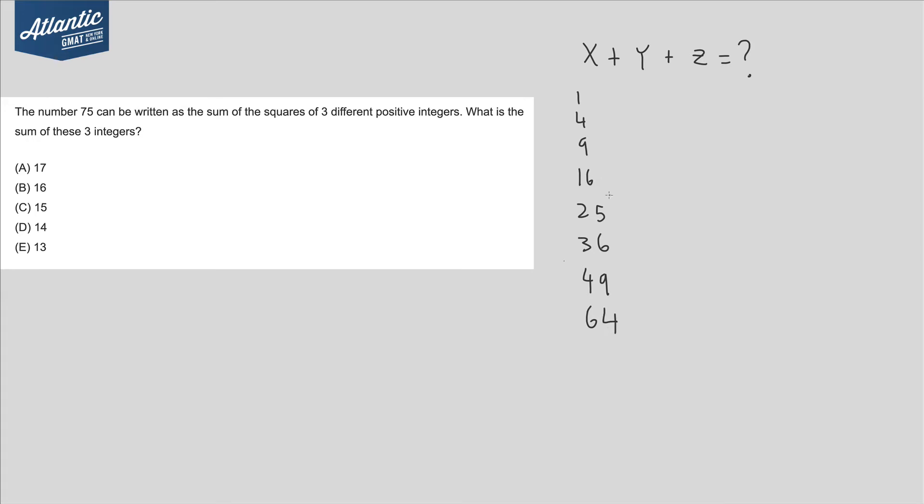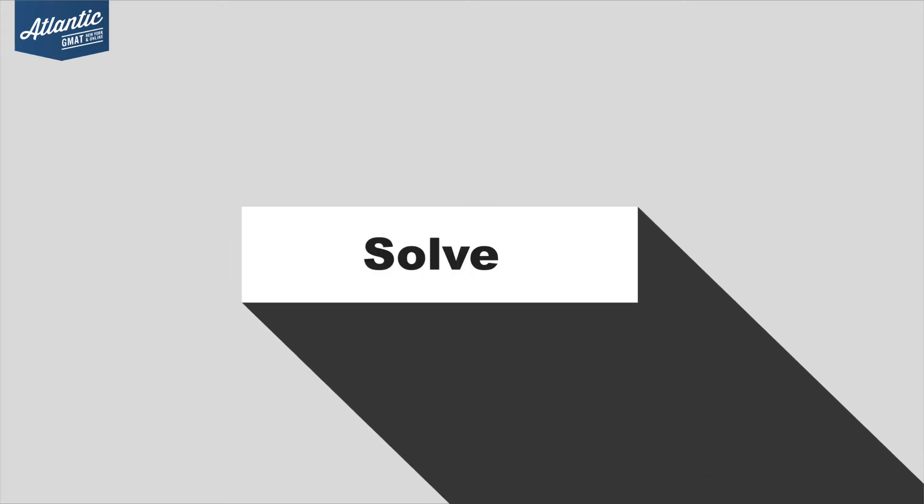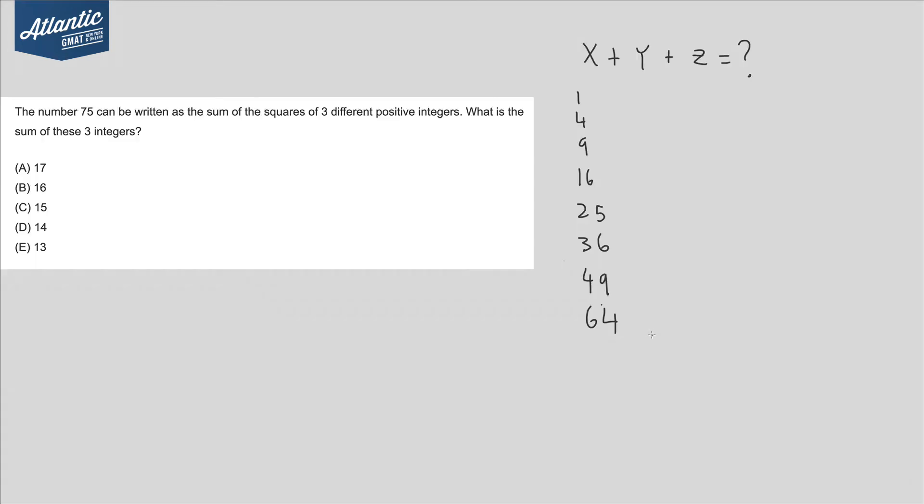I'm gonna stop at 64 because we're talking about the sum of three integers that are gonna add to 75, so it doesn't make sense to go up to 81. I'm gonna start with 64. That's the biggest number. Let's figure out what balance we need to get to 75.